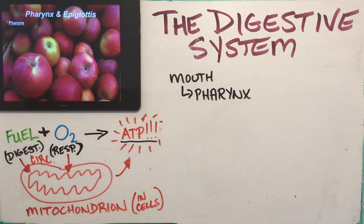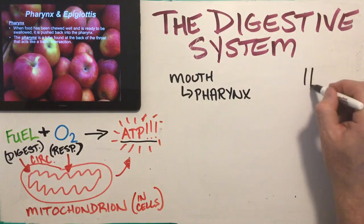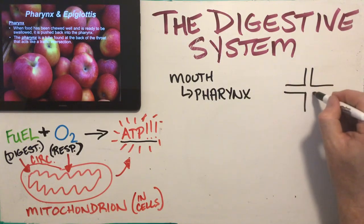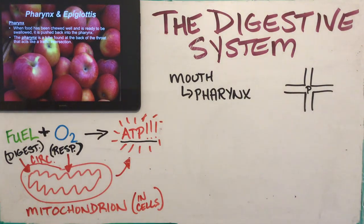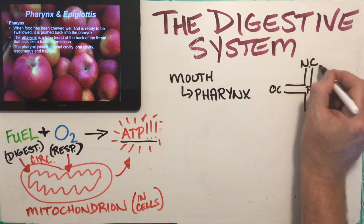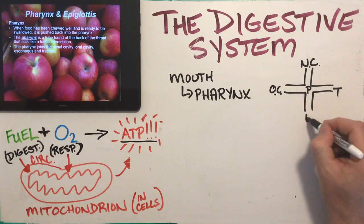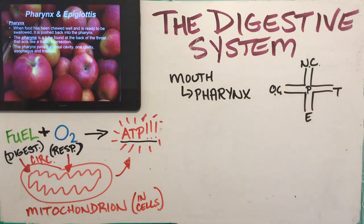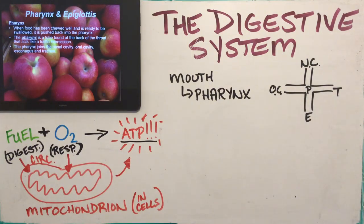The pharynx is basically the intersection at the back of your throat. Think about a traffic intersection where four roads meet — that's the pharynx. What meets there are the oral cavity, the nasal cavity, the trachea (which is the air tube), and the esophagus (which is for food). All four of these tubes meet at the pharynx, at the back of your throat.